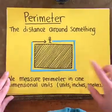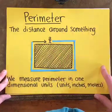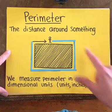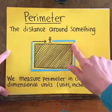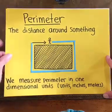The perimeter, remember, is the distance all the way around something. We measure perimeter in one-dimensional units because we're going in a straight line. There's just one dimension. So inches, meters, centimeters, feet, etc.